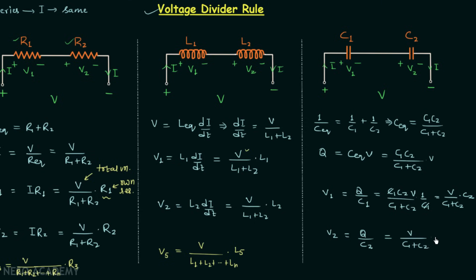This is similar to the resistor and inductor cases, but when we calculate the voltage across the first capacitor we do not multiply by the own capacitance C1 — we multiply by the other capacitor's capacitance, which is C2. So V1 equals V over C1 plus C2, multiplied by C2. Similarly, V2 equals V over C1 plus C2, multiplied by C1, the capacitance of the first capacitor.